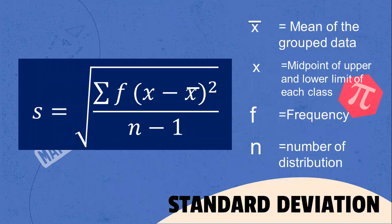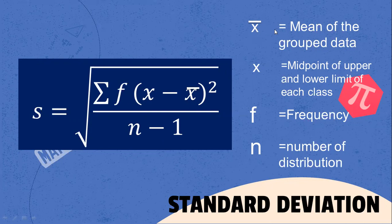What is the formula for standard deviation? Standard deviation is equal to the square root of the summation of F multiplied by the square of the difference of the midpoint minus the mean, over N minus one. Where X-bar is equal to the mean of the grouped data, X is the midpoint of the upper and lower limit of each class, F is the frequency, and N is the number of distribution.